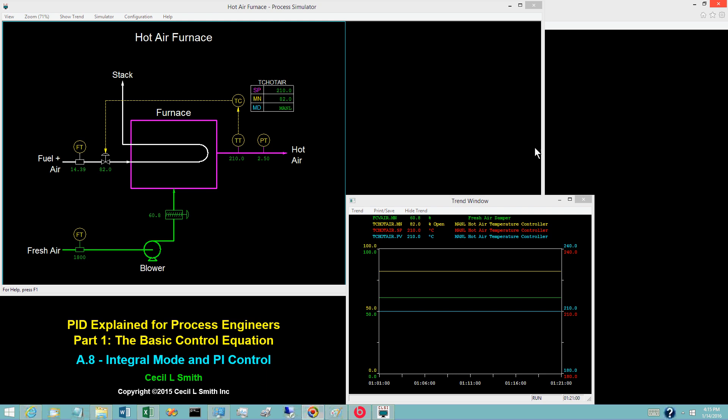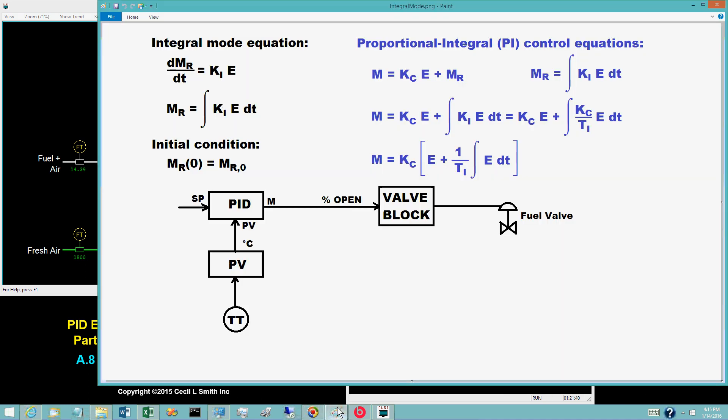The basis for the integral mode is to change the controller output bias M sub R by a rate that is proportional to the control error E. This is expressed by a simple differential equation.